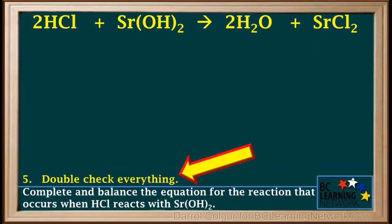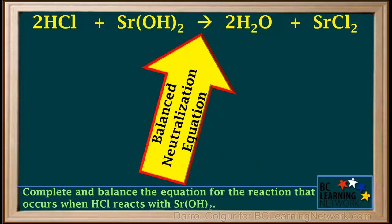At this point, it would be good to double check that the formulas are all correct and the atoms and charges in the equation are all balanced. So now we've completed the balanced neutralization equation for the reaction that occurs when HCl reacts with Sr(OH)₂.